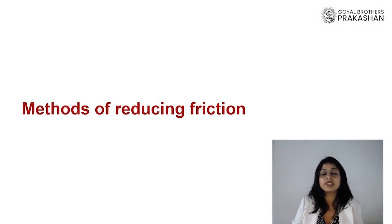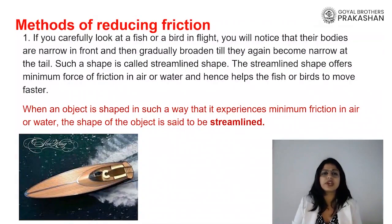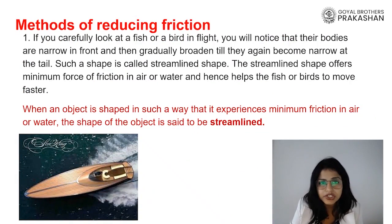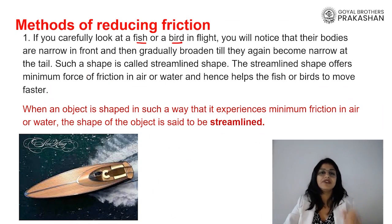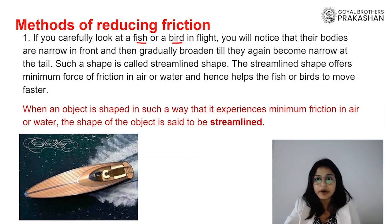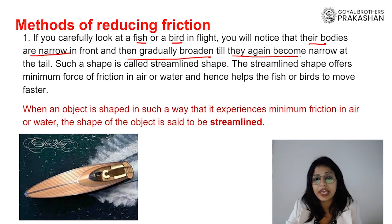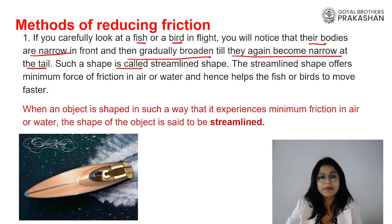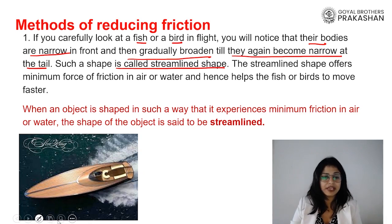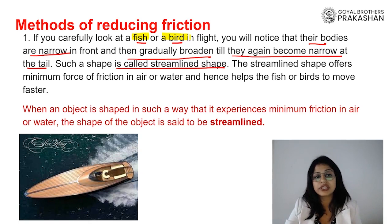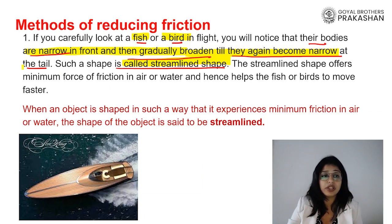There are various methods we can employ to reduce friction. Number one, you might have seen fishes or even birds in flight. They always have a similar body shape. Fishes have a streamlined body, and so does the bird. Their bodies are narrow in the front, gradually broaden, then become narrow again at the tail. Such a shape is called a streamlined shape. We have learned from nature — fishes and birds have a narrow head, narrow tail, and a broader centerpiece.